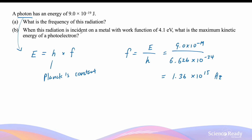When this radiation is incident on a metal with a work function of 4.1 electron volts, what is the maximum kinetic energy of a photoelectron? The work function of a metal refers to the minimum amount of energy required to remove an electron from the metal. This is provided in electron volts, which is an alternative unit to joules. A photoelectron refers to an electron that has been removed and ejected from the metal when radiation hits the surface.